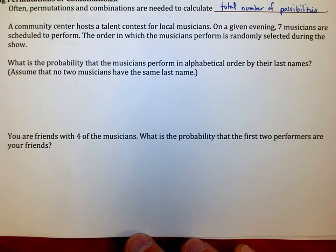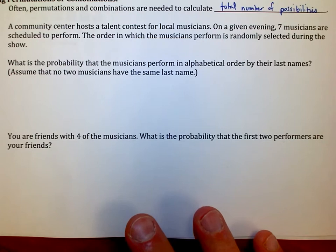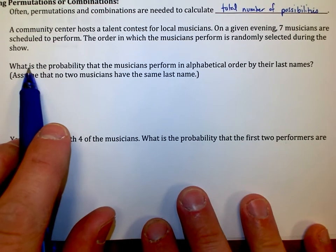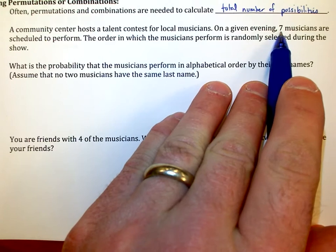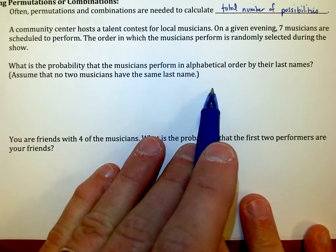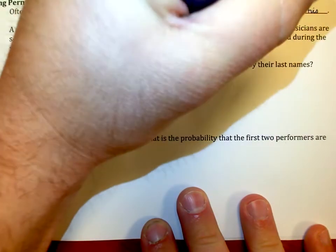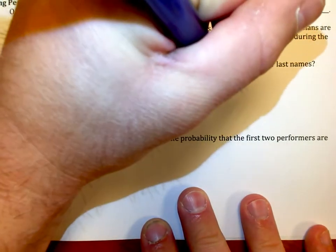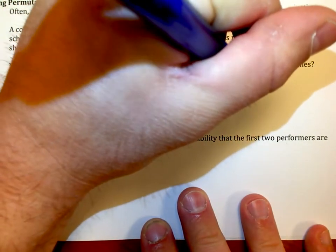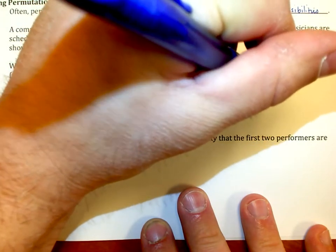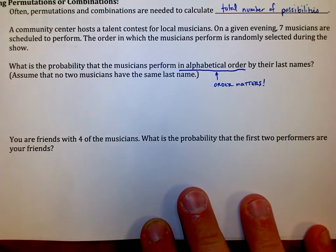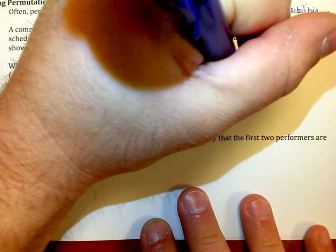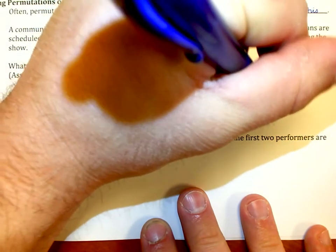Okay, so first things first, how many different possibilities do we have? Notice that we're talking about a situation where we have seven musicians and we're going to line them up in alphabetical order. This right here means that order matters. And I hope that sounds familiar after the last few days of working on problems. That means that we're working with a permutation here. Order matters.